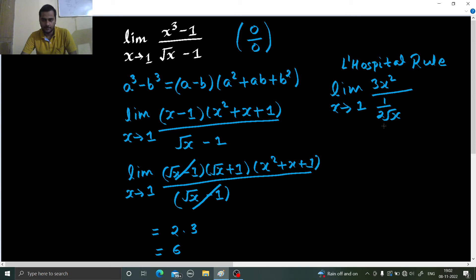Now, we can write this as limit x tending to 1, 3x square into 2 root x. We can now put 1 here because no problem is there. 3 into 1 square into 2 root 1, this will give you 6 directly.